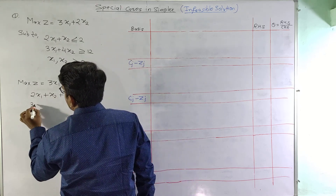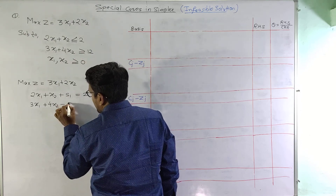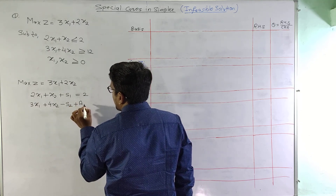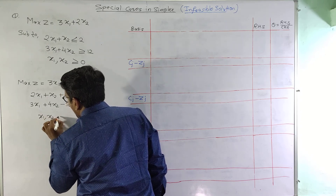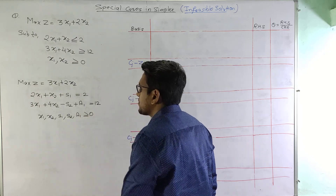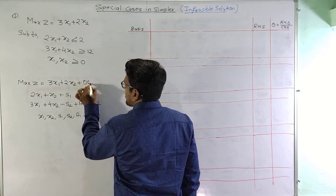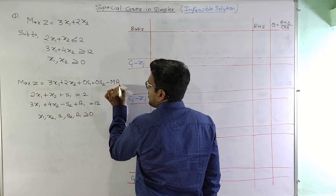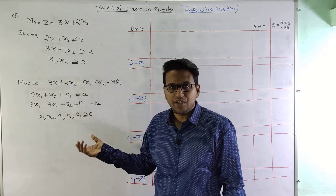In the second constraint, 3x1 plus 4x2 has a greater-than-or-equal-to sign, so we will subtract a surplus variable S2 and introduce one artificial variable A1. This equals 12, and x1, x2, S1, S2, A1 must all be greater than or equal to 0. This takes effect on the objective function as 0·S1 plus 0·S2 minus M·A1. We have already seen how slack, surplus, and artificial variables are introduced.